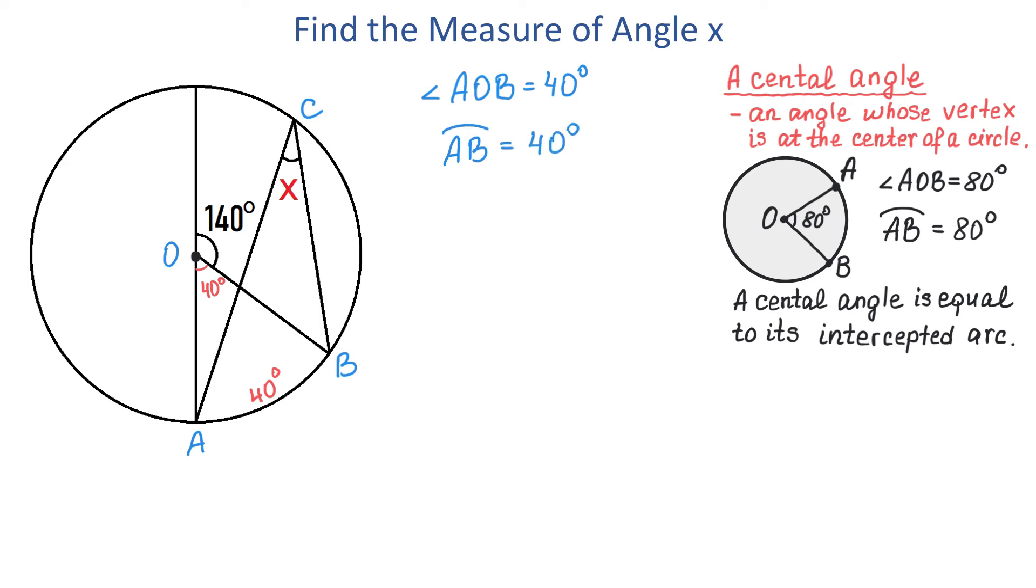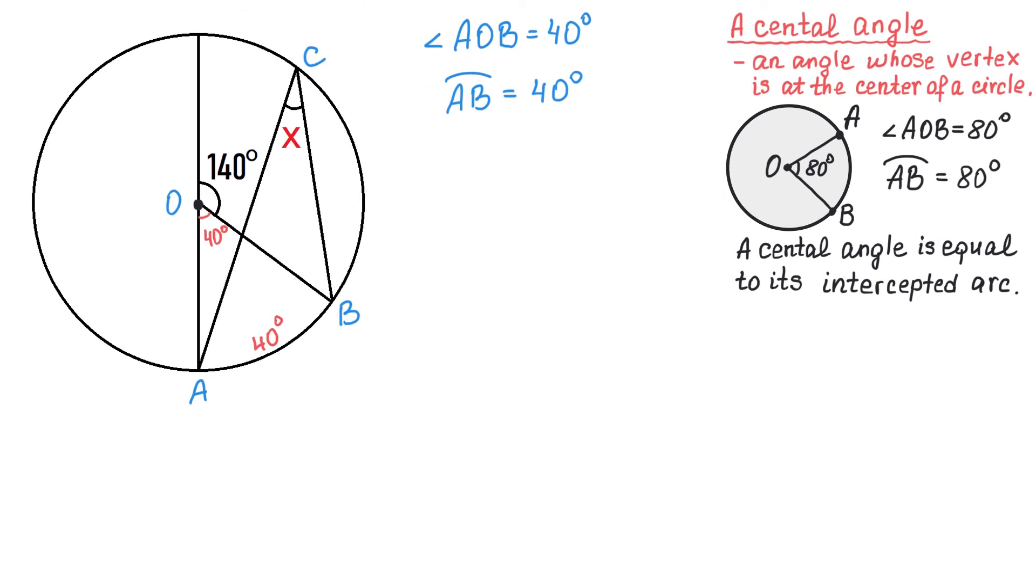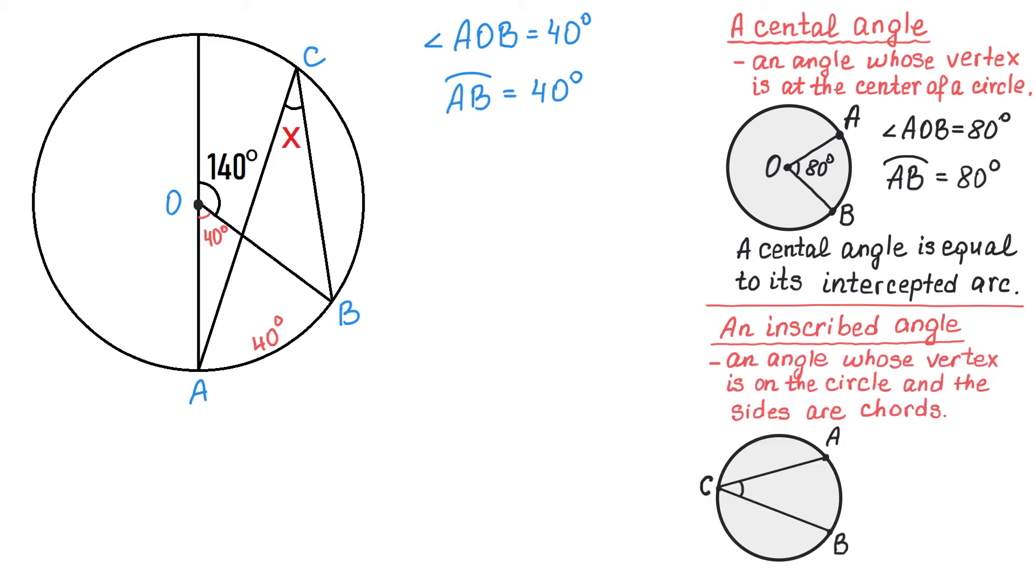Now to continue with the problem we need one more definition. This is going to be the definition of an inscribed angle. An inscribed angle is an angle whose vertex is on the circle and the two sides are chords. And now let's see what is the relation between this angle and the intercepted arc. Here we have it and an inscribed angle is one half of its intercepted arc.